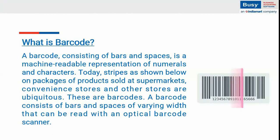First, let's discuss what a barcode is. A barcode consists of bars and spaces. Most branded products — and even some unbranded ones — have barcode stickers. Those stickers consist of bars and spaces and are a machine-readable representation of numeric and character values. The stripes seen on packages at supermarkets and convenience stores are ubiquitous. A barcode consists of bars and spaces of varying width that can be read with an optical barcode scanner — without which we cannot read the values.